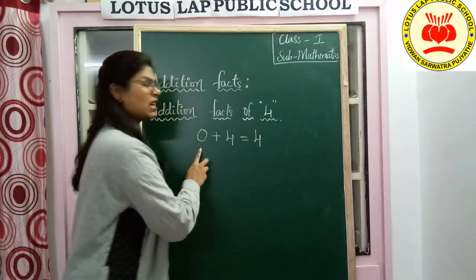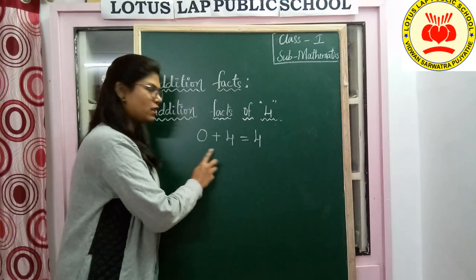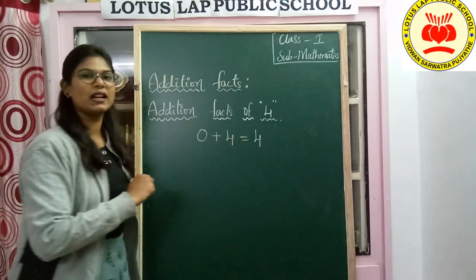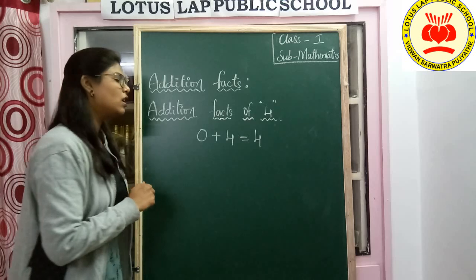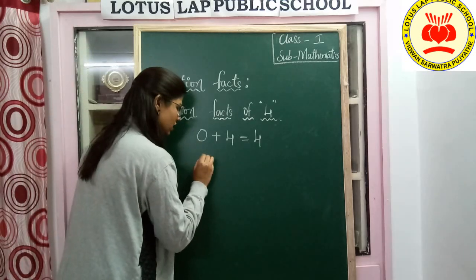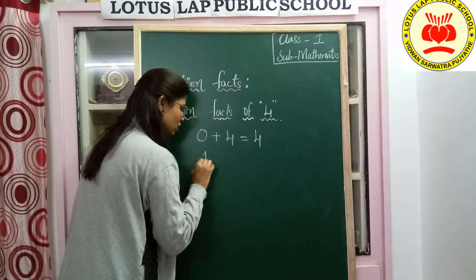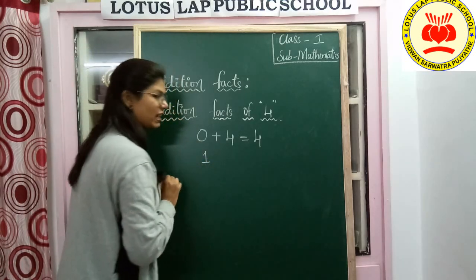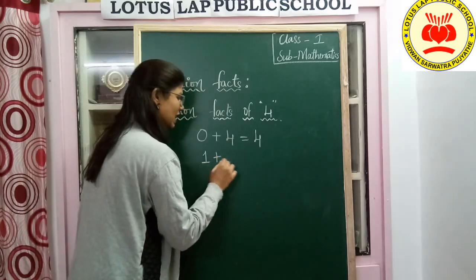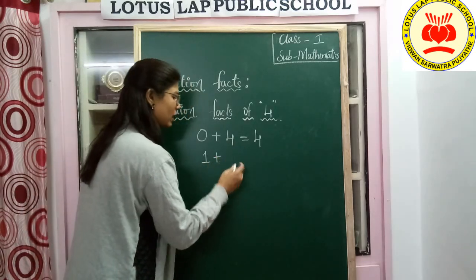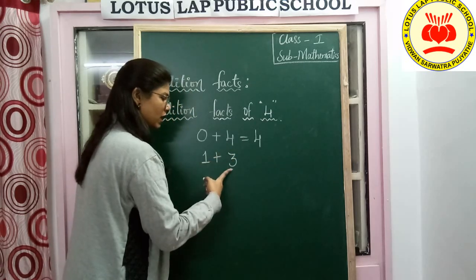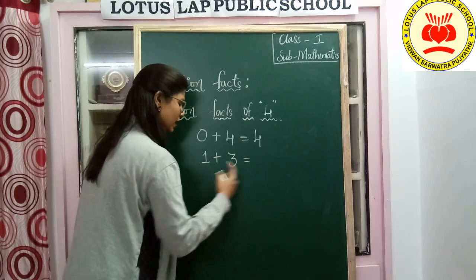4. Why? Because 0 is going to be added to 4, so we are getting the result as 4. Now 0 is finished. We have to increase the order. After the plus sign, the order will be decreased.